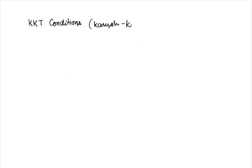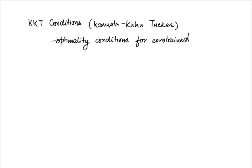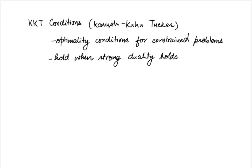Next, let us come to the KKT conditions, or the Karush-Kuhn-Tucker conditions, which are essentially optimality conditions for general constrained problems that satisfy strong duality. The KKT conditions hold for all problems that satisfy strong duality. So, if you know that strong duality holds for a problem — be it through verification of sufficient conditions like convexity and Slater's condition, or through any other way — you can be sure that the optimal solution will satisfy the KKT conditions.